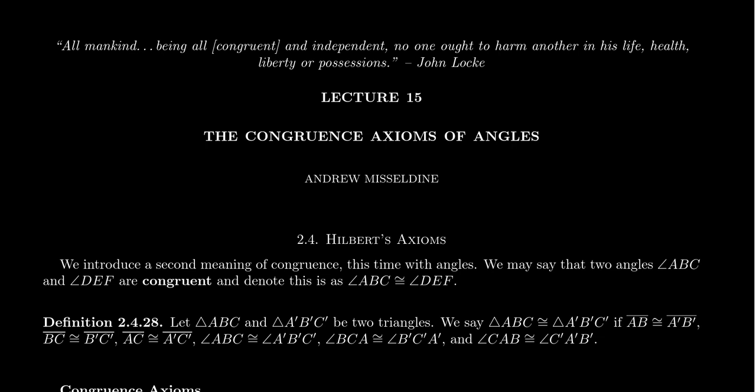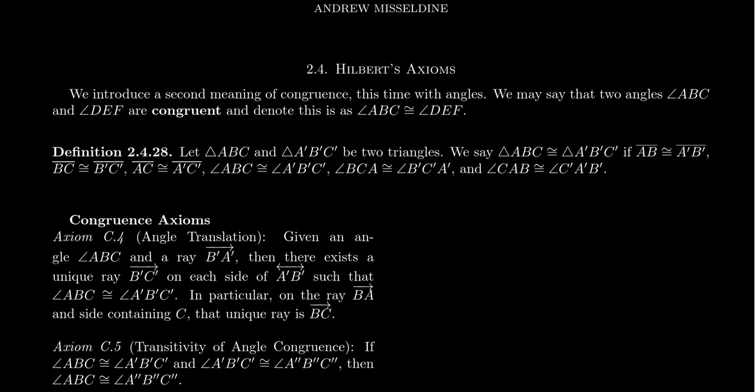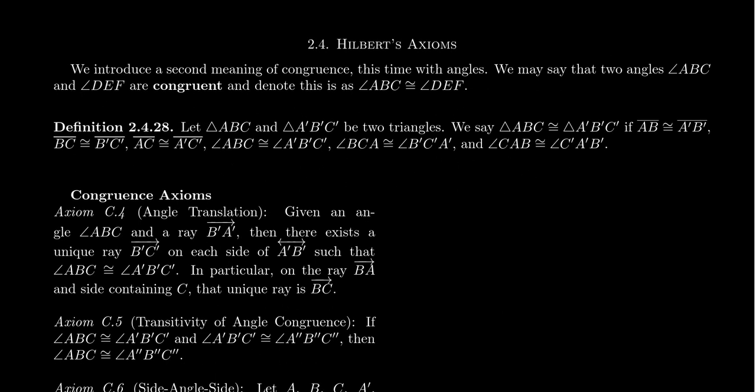We defined the idea of a congruence geometry — one which is an order geometry plus the six axioms of congruence. We mentioned the first three, and I promised that in lecture 15 we would introduce the congruence axioms for angles. As a reminder, we introduced an undefined term for congruence of line segments, for which we got segment translation, transitivity of segment congruence, and segment addition.